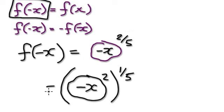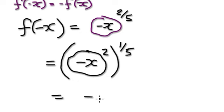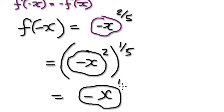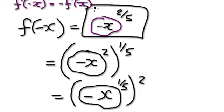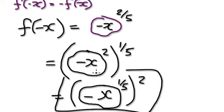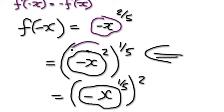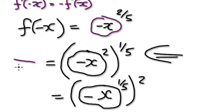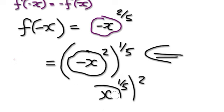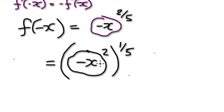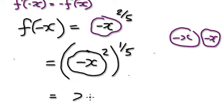Starting from here, I could either visualize it as squaring first and then taking the fifth root, or taking the fifth root first and then squaring. Whichever is easier. I would choose to visualize it as squaring first, because when you square minus x, it's really easy. Whereas the other way is slightly harder. So I'm going to visualize it as this. Looking at this, minus x squared will be x squared — minus x times minus x will always be positive x squared.